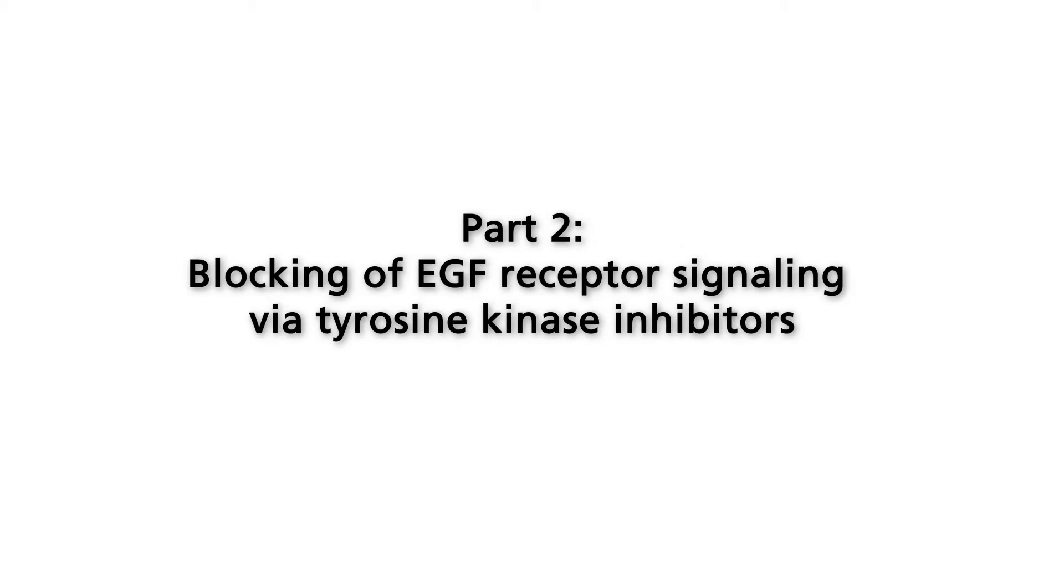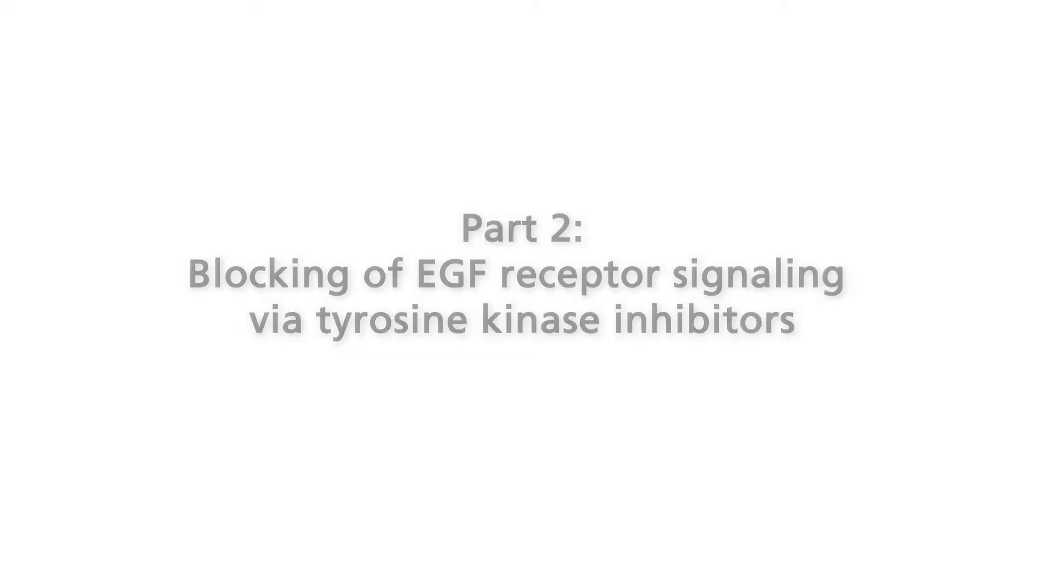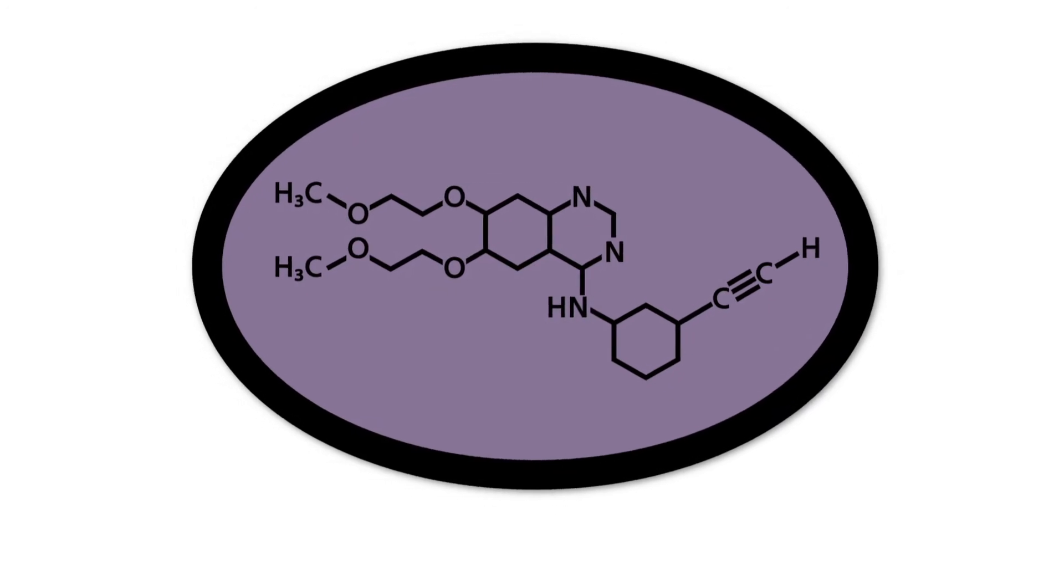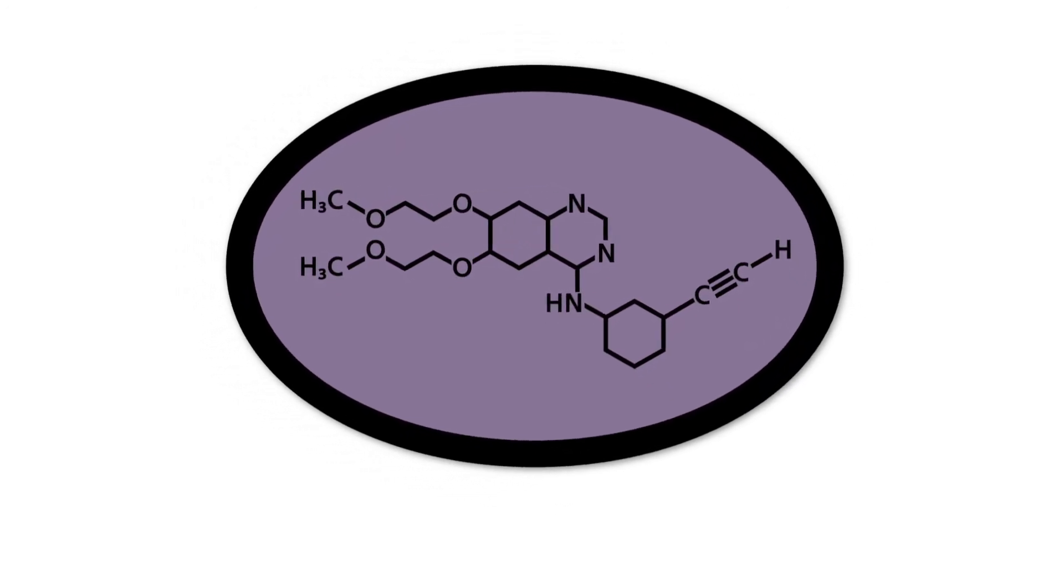The second principle applied to block dysregulated signaling via EGF receptors involves small molecules that inhibit the intracellular receptor tyrosine kinase domain. Several protein kinase inhibitors have been developed for cancer treatment.